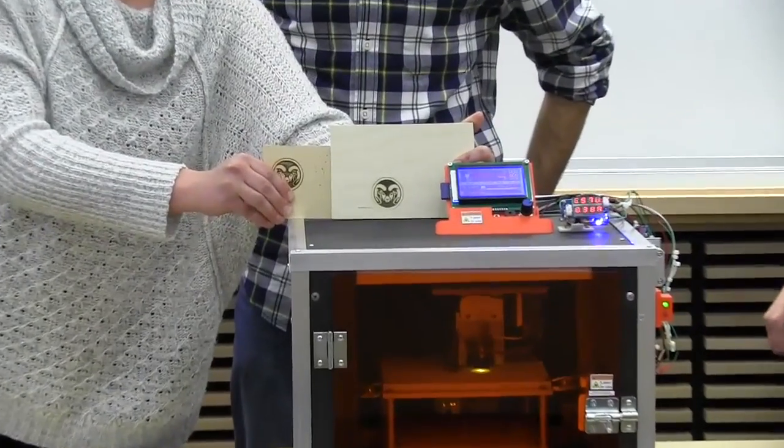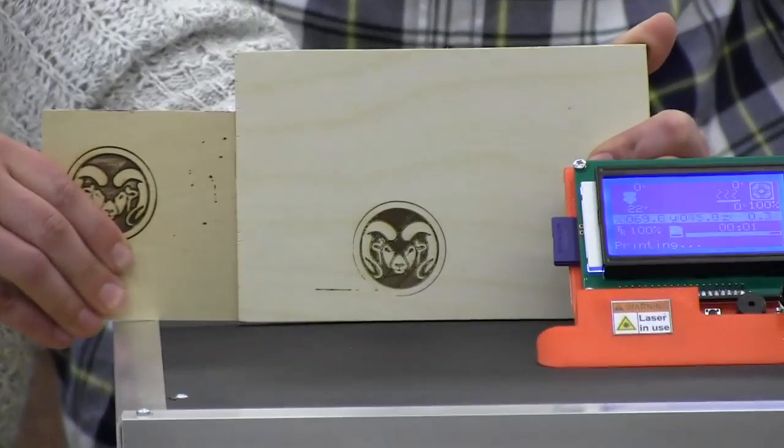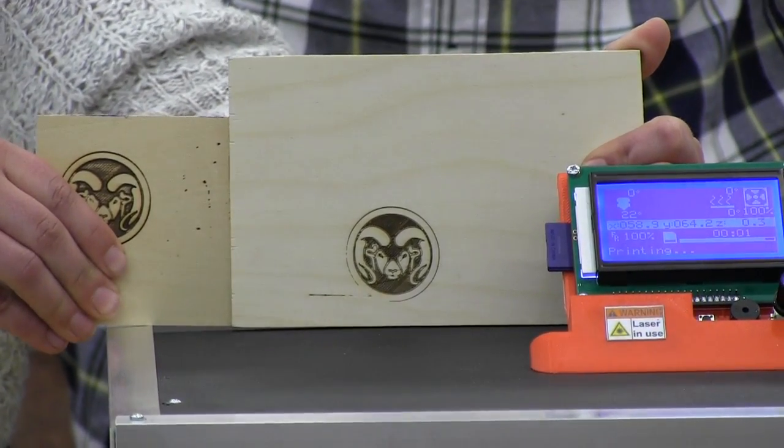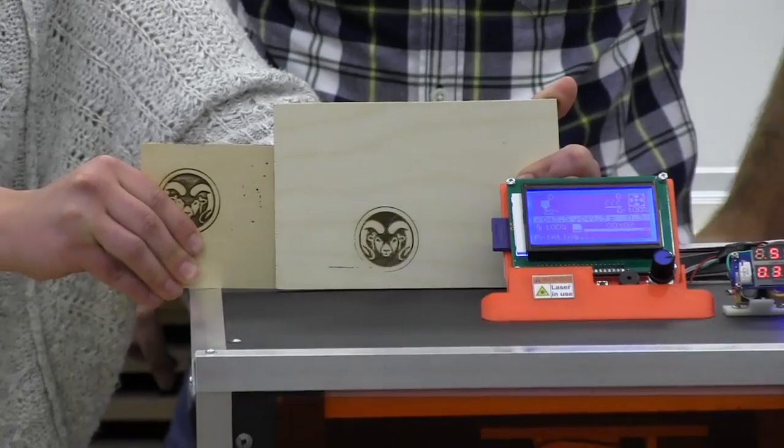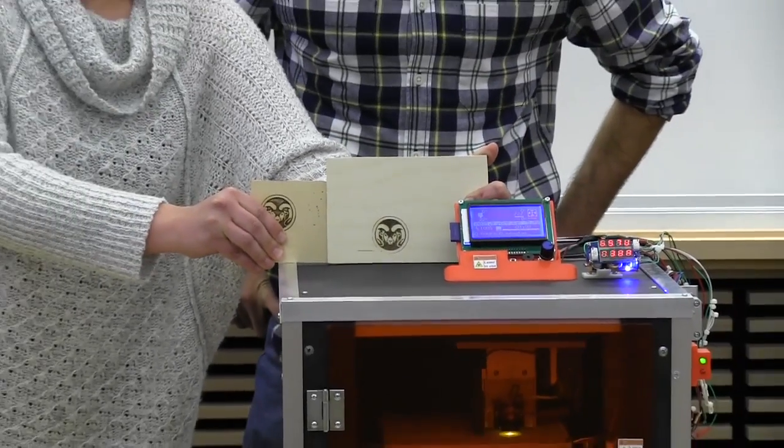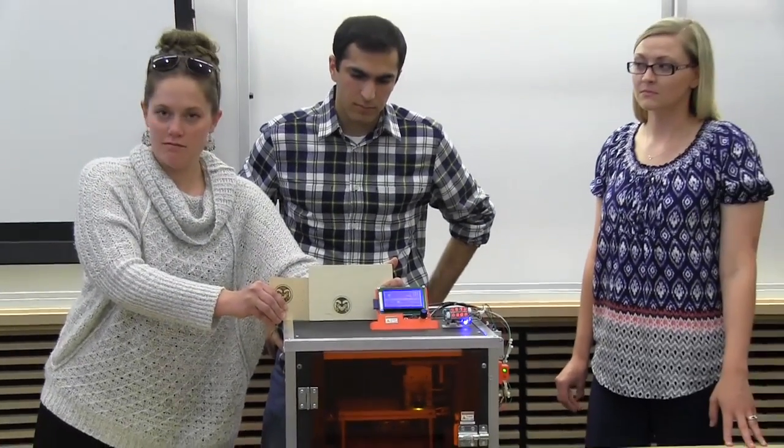We used two different methods of getting the G-code. The first one was using Inkscape to create the G-code. We also used SolidWorks and a G-code compiler, so we tried a couple different methods, and this is how it turns out. It takes about 15 minutes.